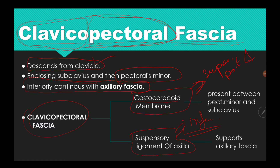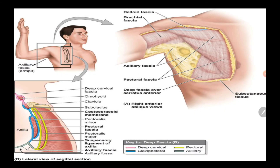The costocoracoid membrane is present between the pectoralis minor and subclavius. The suspensory ligament of the axilla functions to support the axillary fascia, and it is also involved in the formation of the axillary fossa.